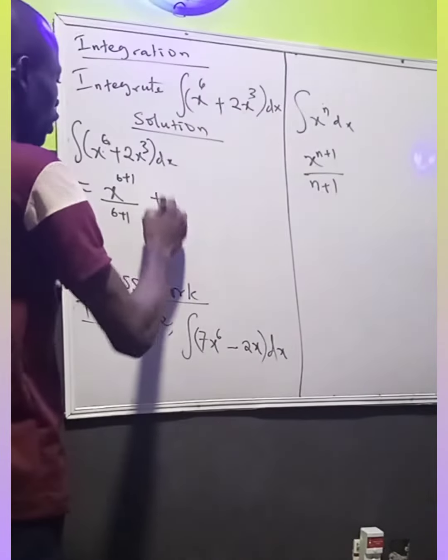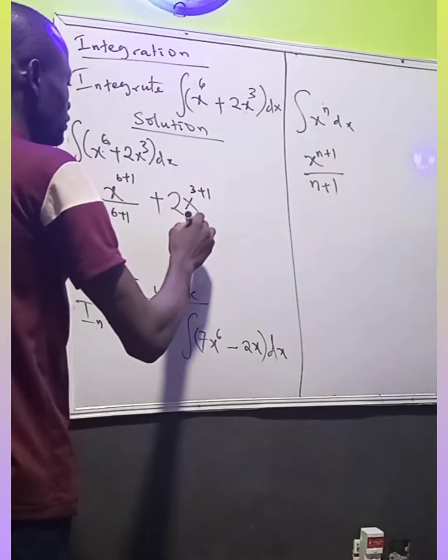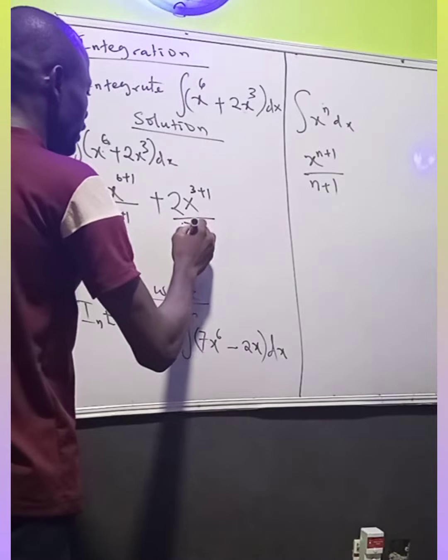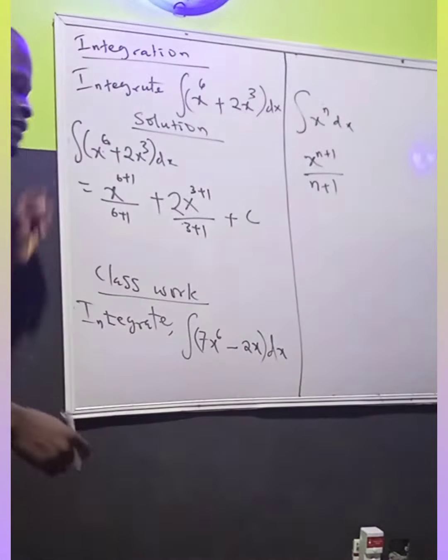So the x raised to power 3 plus 1 divided by 3 plus 1 plus c, and that c is the constant.